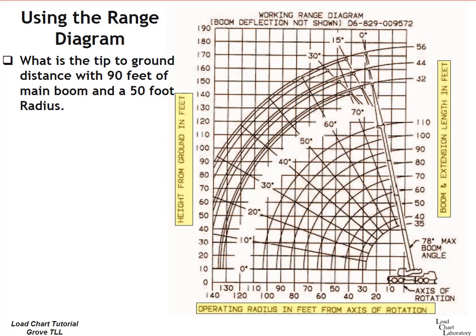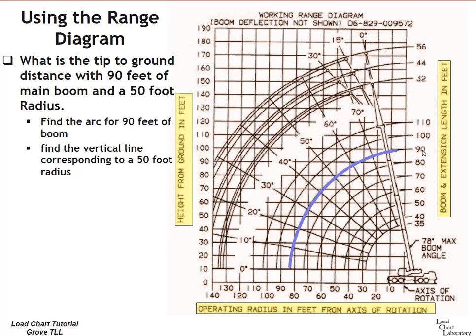Here's an example. I'll just show you how I use the range diagram. What is the tip to ground distance with 90 feet of main boom and a 50-foot radius? Find the arc for 90 feet of main boom. Here we've got 90 feet of main boom and there's an arc that corresponds to 90 feet of main boom.